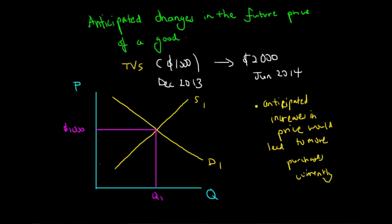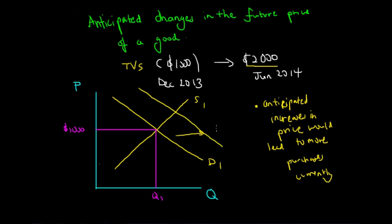Because economic agents act to maximise their living standards and to minimise opportunity cost, and they believe that the price of TVs would increase to $2,000 per TV within six months while currently TVs are only $1,000, they would increase the demand for TVs now. So the demand curve for TVs will shift to the right to D2.